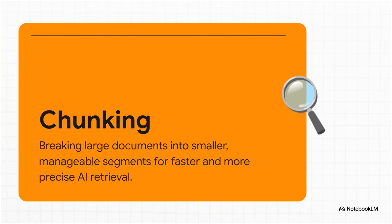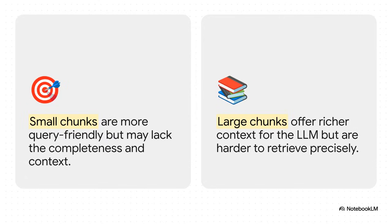At its heart, chunking is all about prepping the AI's open book. You're splitting huge documents into smaller, digestible pieces. These chunks then get converted into something called vectors — think of them as numerical fingerprints of meaning — and stored in a special database so the AI can search them super fast. If you get this right, you get amazing accuracy and efficiency. But if you get it wrong, you don't just get bad answers; you get those really weird, confident-sounding AI hallucinations. And this is the fundamental tension you always have to balance: precision versus context.